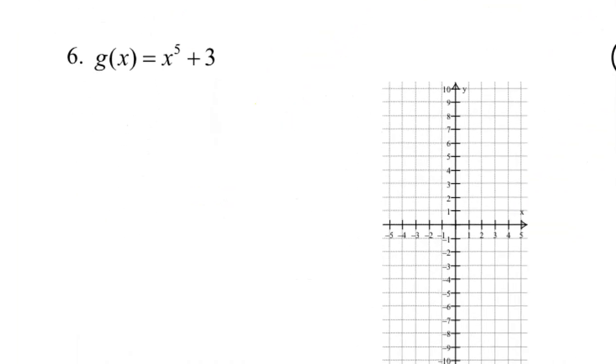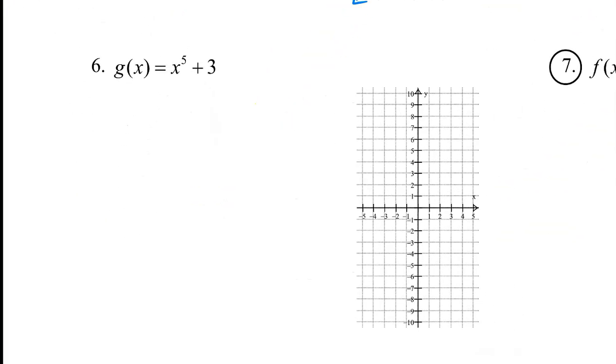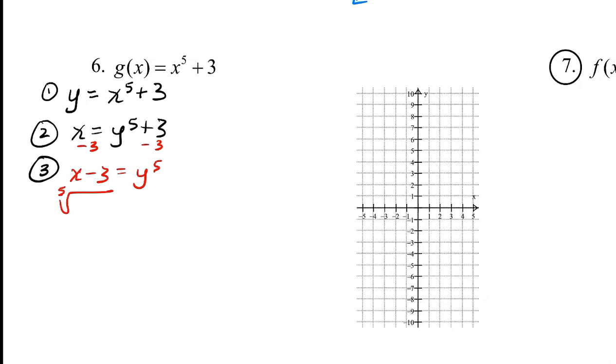Let's look at one more example, number 6. Step 1: we will replace the g(x) with a y. We'll interchange the x and the y. Third, we'll solve for y. To solve for y, we'll subtract 3 from both sides, and then we need to do a 5th root of both sides. And then lastly, we'll get rid of this y right here and we'll put the correct g notation.